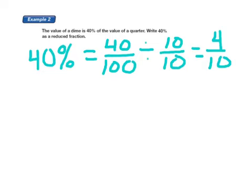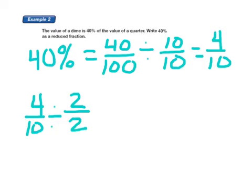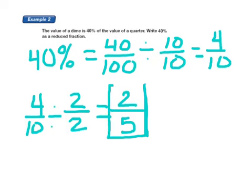But I can reduce 4 tenths even further, because they're both even. So if I take 4 tenths, I divide it by 2 halves, because I know 2 is a factor of 4 and 10. 4 divided by 2 equals 2. 10 divided by 2 equals 5. Well, that says 2 fifths. So 40% reduced to the lowest fraction is 2 fifths.